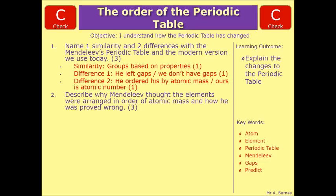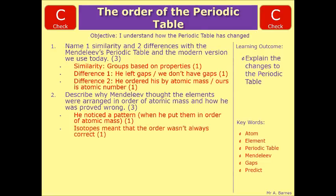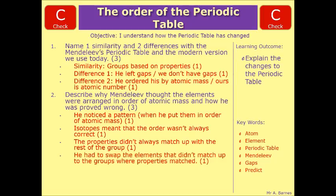Okay, on to question two, which says, describe why Mendeleev thought the elements were arranged in order of atomic mass, and how he was proved wrong. So, the first one is he noticed a pattern. So when he put them into order of atomic mass, he saw that there was a pattern with the properties. That's your first mark. The second one was the existence of isotopes meant that the order wasn't always correct. The properties didn't always match up with the rest of the group. And finally, he had to swap the elements that didn't match up to the groups where the properties matched, which proved it wasn't always atomic mass. So any three of those four points would have got you three marks.